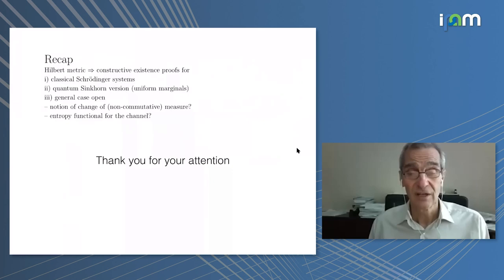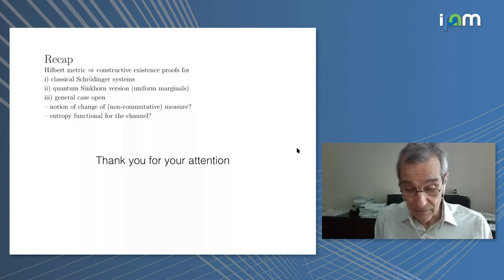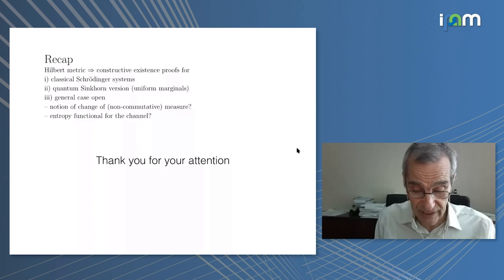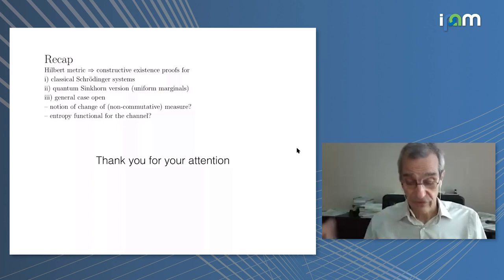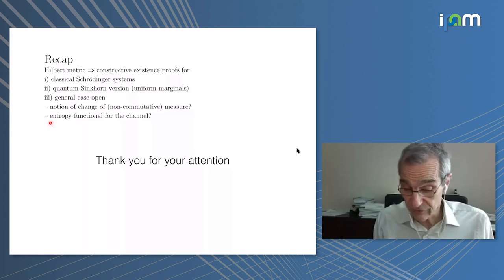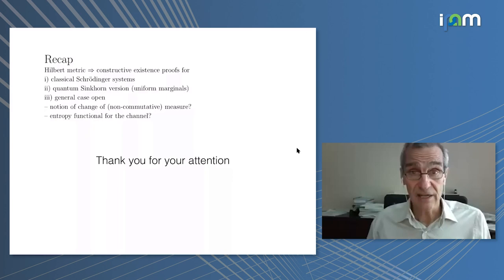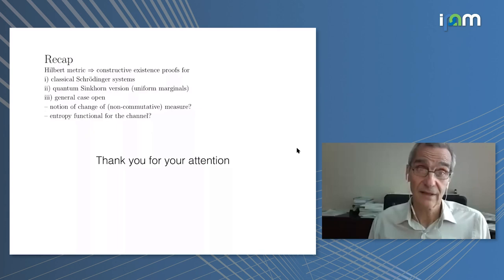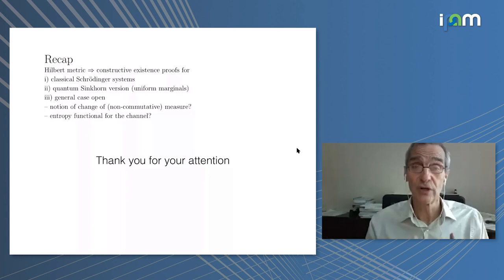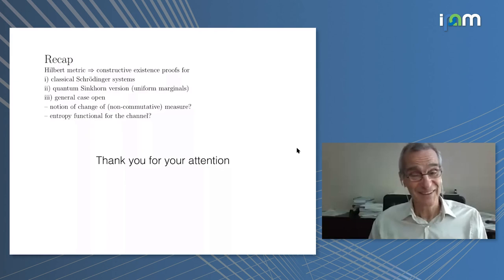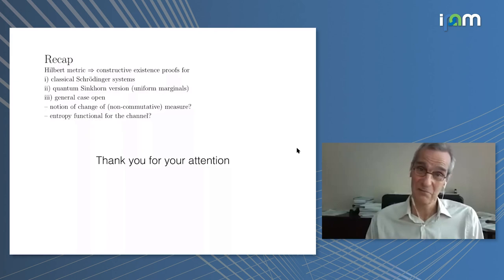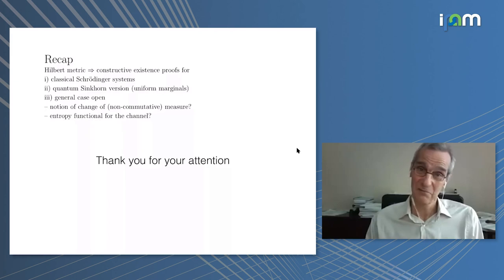Just to recap because I'm running out of time, the Hilbert metric gives you constructive proofs of existence for the classical Schrödinger systems and some versions of the quantum Schrödinger system which relates to a quantum version of a Sinkhorn problem when you have uniform marginals. The general case is quite open. This suggests some sort of a notion of change of measure. There are big question issues: even if there is a solution to such a system always, does it minimize a certain functional? Here we're a little bit out of our depths because it would require some sort of a joint entropy at the two ends of the channel, and I'm open to suggestions. Many of you in the audience may know more about other tools that may come to assistance here. So with that I would like to end my presentation. Thank you very much for your attention.